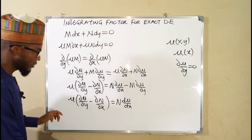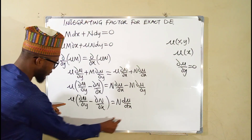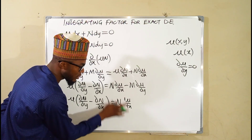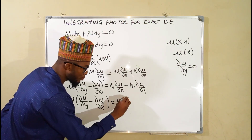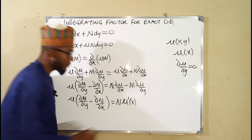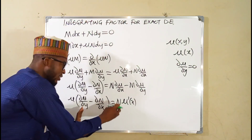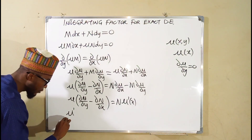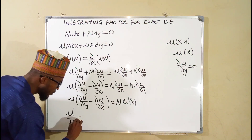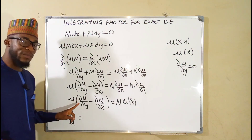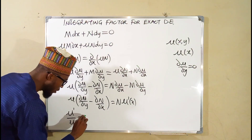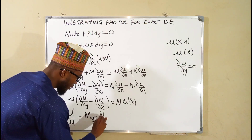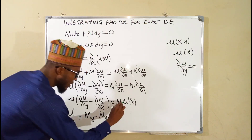We collect like terms by bringing the mu terms together. This gives us mu-prime over mu, which can also be written as d·mu/dx divided by mu. This is equal to — using subscript notation — M subscript y minus N subscript x, all divided by N.